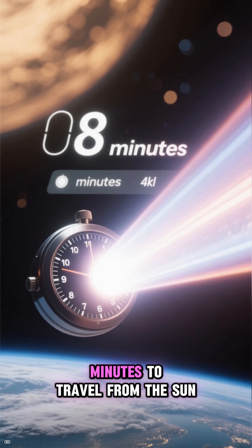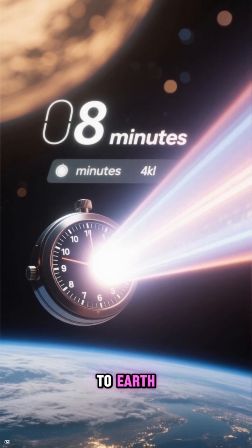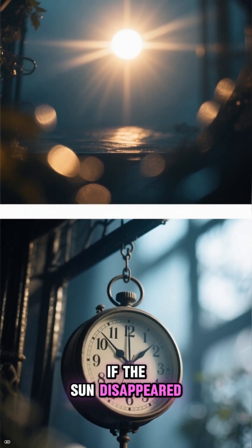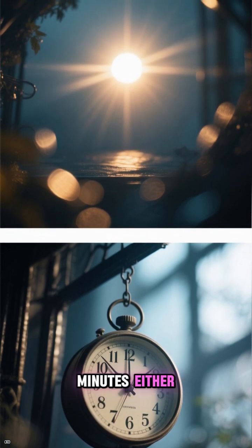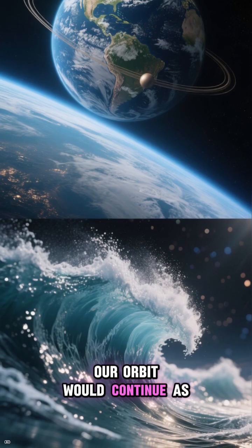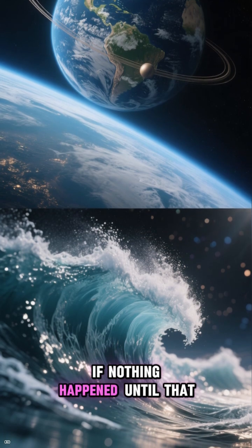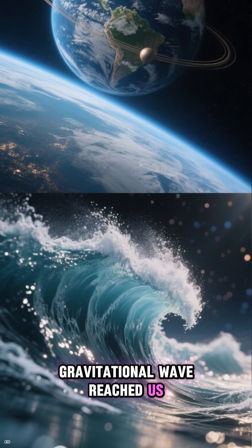It takes light about eight minutes to travel from the sun to Earth. If the sun disappeared, we wouldn't see it for eight minutes, and we wouldn't feel the change in gravity for eight minutes either. Our orbit would continue as if nothing happened until that gravitational wave reached us.